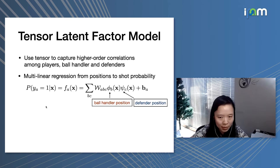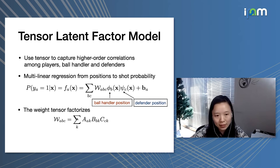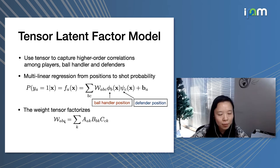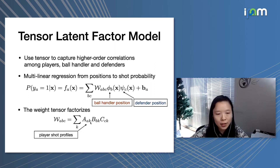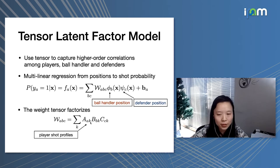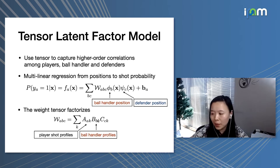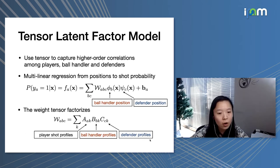To reduce dimensionality and avoid model overfitting, we factorize the model tensor using a CP model. We assume that the model tensor W_{a,b,c} can be factorized into three components. Matrix A represents the player's shooting profile — we assume there are k latent components, so every player will have k different shooting profiles. Matrix B represents the ball handler profiles over different spatial grids, and matrix C represents the defender profile over locations. This is how we model the higher-order correlation for basketball plays.